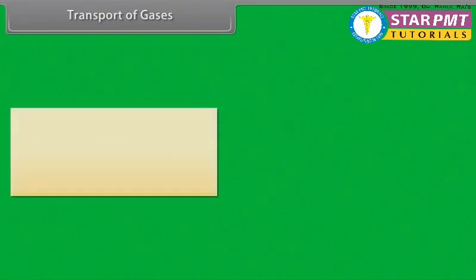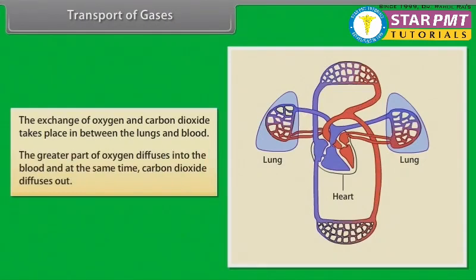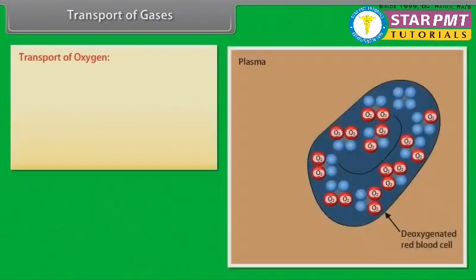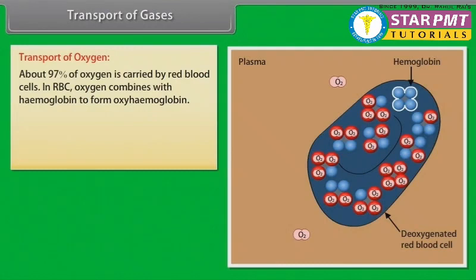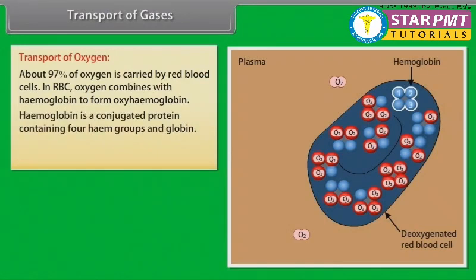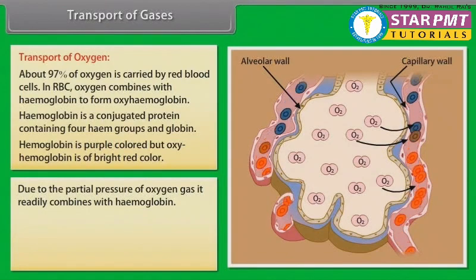Transport of gases. The exchange of oxygen and carbon dioxide takes place between the lungs and blood. The greater part of oxygen diffuses into the blood, and at the same time carbon dioxide diffuses out. Transport of oxygen: about 97% of oxygen is carried by red blood cells. In RBCs, oxygen combines with hemoglobin to form oxyhemoglobin. Hemoglobin is a conjugated protein containing four heme groups and globin. Hemoglobin is purple colored, but oxyhemoglobin is of bright red color.